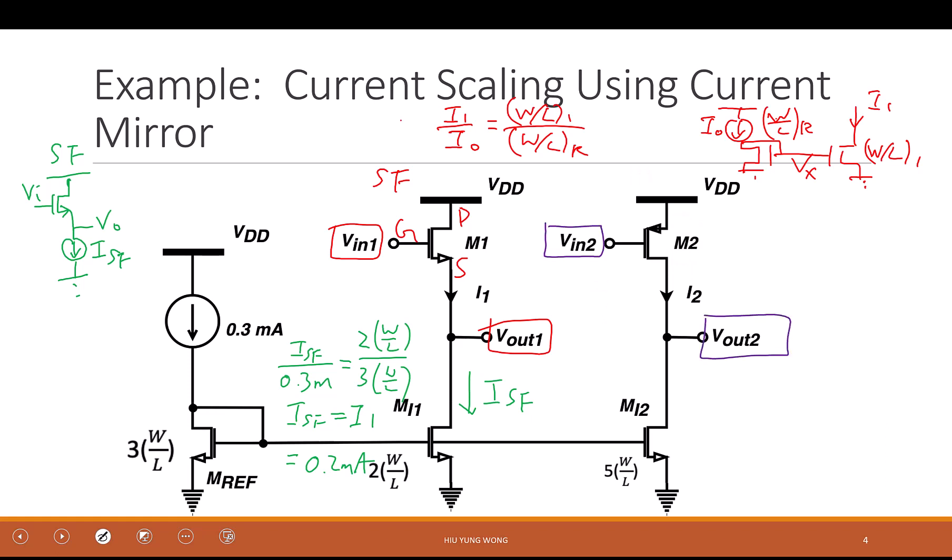Yeah, someone says PMOS and then someone says CS, right? Because PMOS, so what is the top source? This is drain. This is gate, right? So input is at gate. Output is at drain. So this is a common source amplifier.